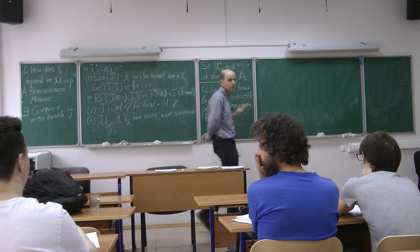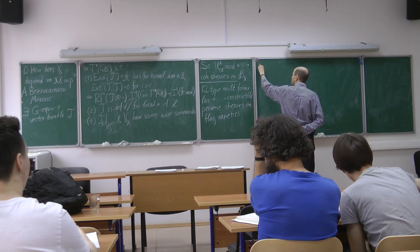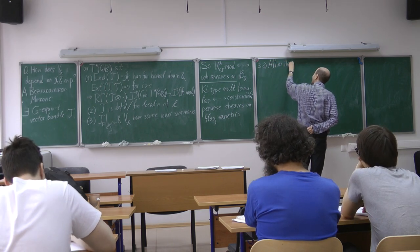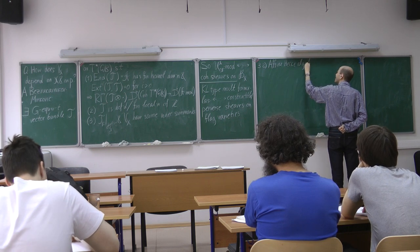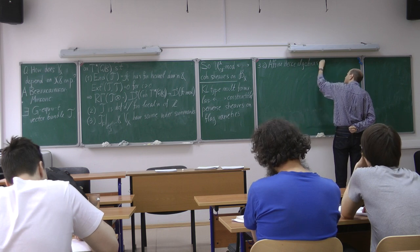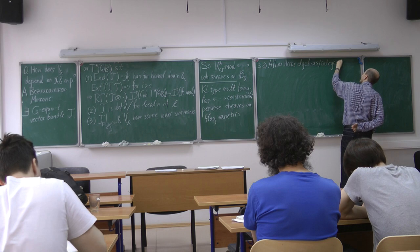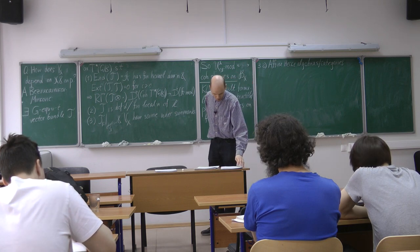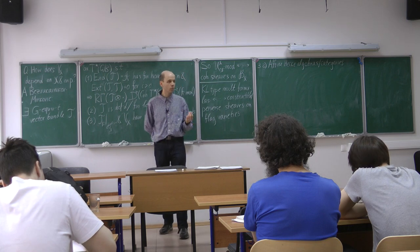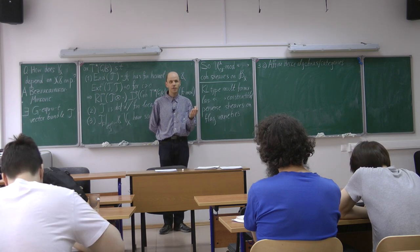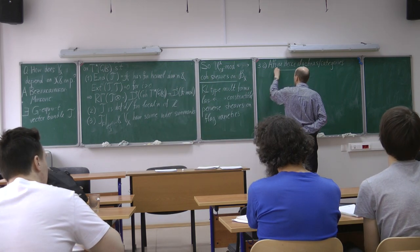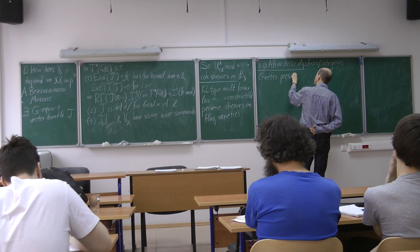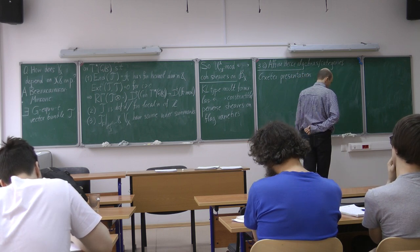So what I want to do next is explain his results, and the nice thing about his results is that in order to explain it we need to spend only very little time talking about categories because this relation already manifests itself on the level of usual Hecke algebras. So now until more or less maybe until the end of this lecture we will talk about affine Hecke algebras, and in the very end we will talk about affine Hecke categories.